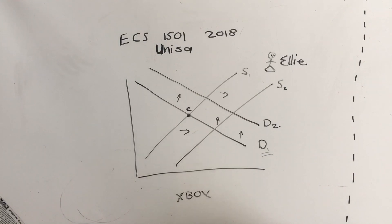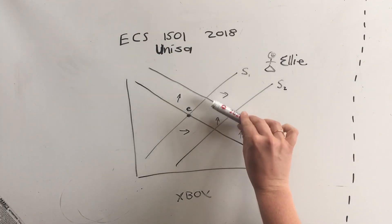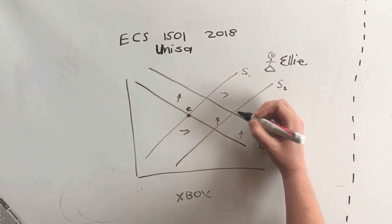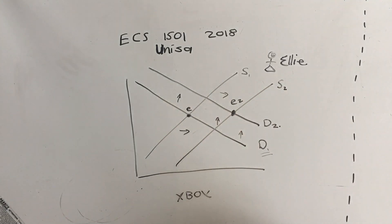Now we have to find the new equilibrium, so the new happy place. Demand 1 moved up from here to there, supply 1 moved to supply 2. The two new lines intersect here.